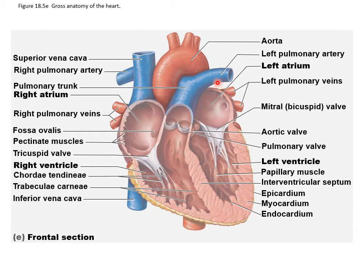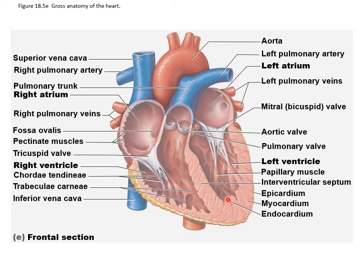The left pulmonary artery, left atrium, and pulmonary veins bring oxygenated blood in. The mitral valve is the valve between the left atrium and the left ventricle. The two semilunar valves are the aortic semilunar valve and the pulmonary semilunar valve. Then there's the left ventricle, papillary muscle, interventricular septum, and the three layers of the heart wall — endocardium, myocardium, and epicardium.